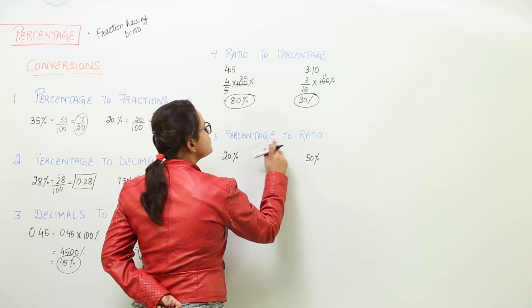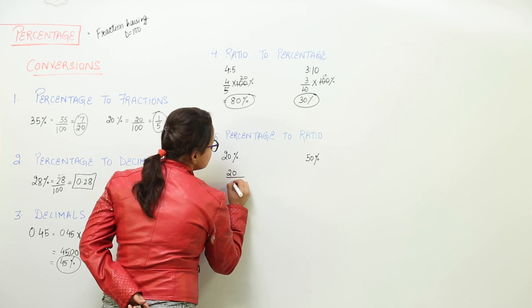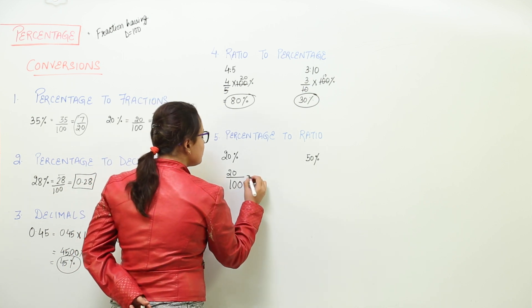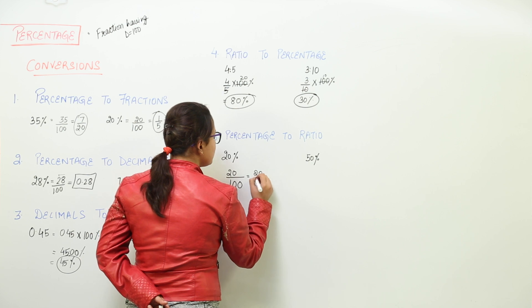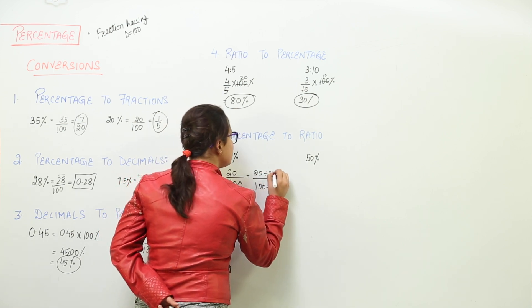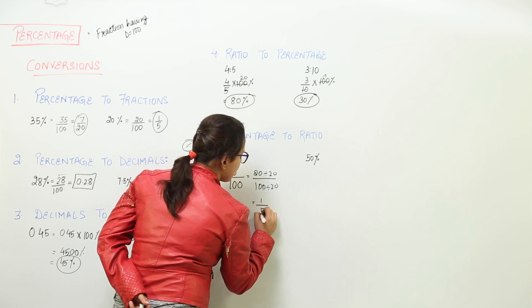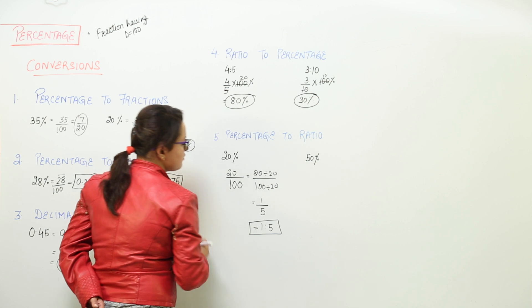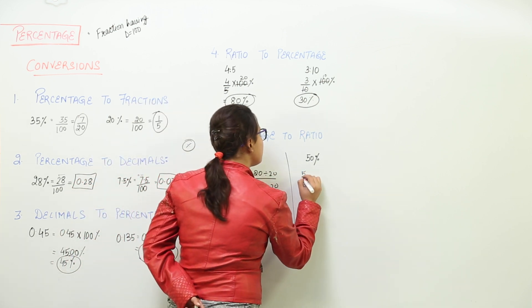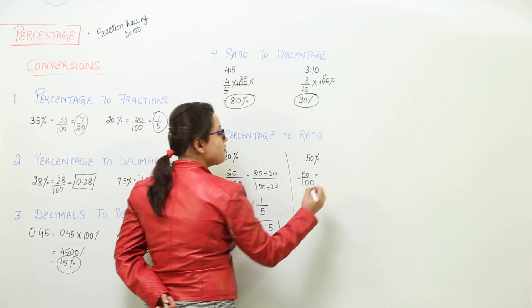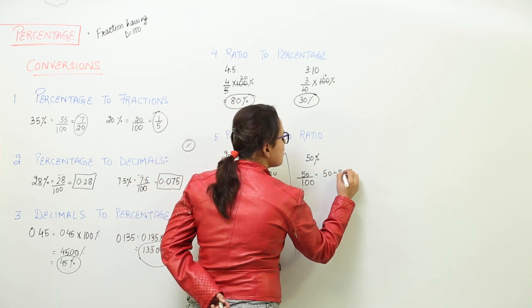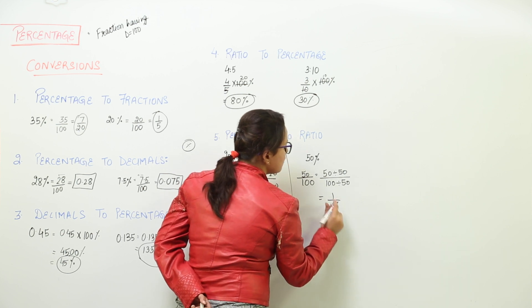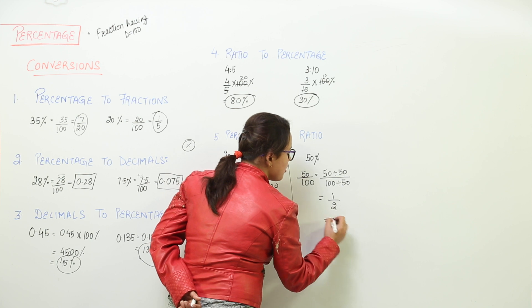The last is the percentage to ratio conversion. To get rid of the percentage sign, we write 20 over 100. This can be simplified by dividing by the common factor of 20, giving 1 over 5, and we write the ratio as 1 is to 5. For 50 percent, we write 50 upon 100, divide by the common factor of 50, and get 1 by 2 — the simplest form — giving the ratio 1 is to 2.